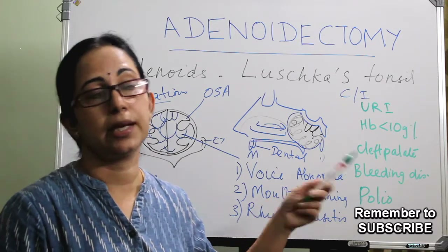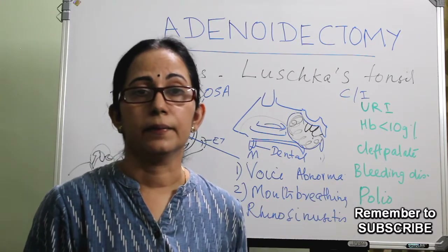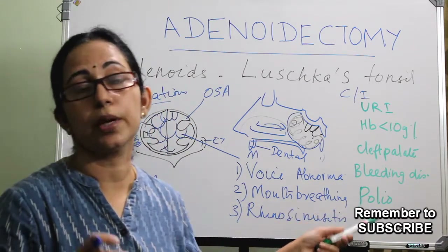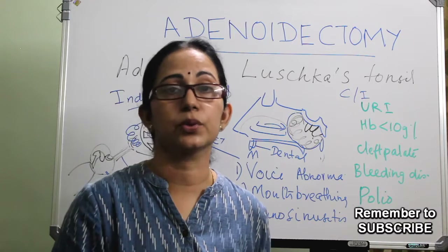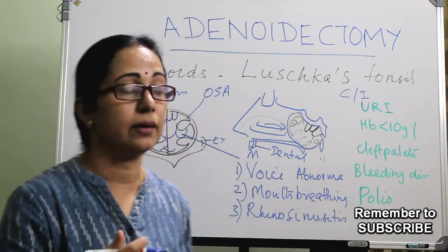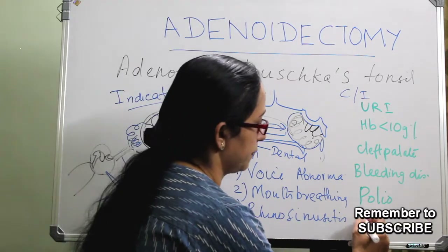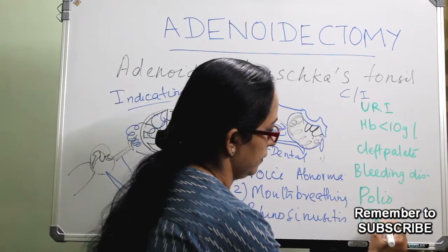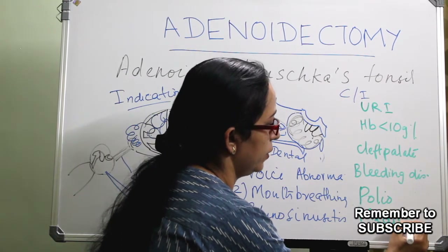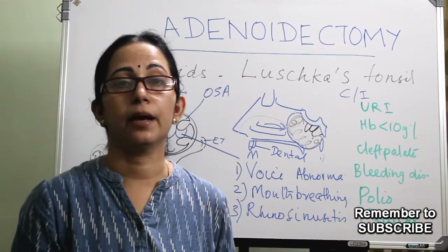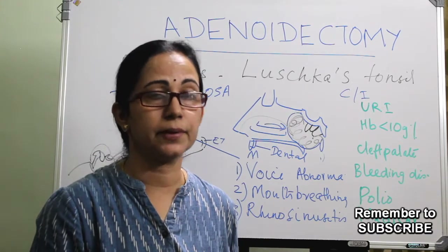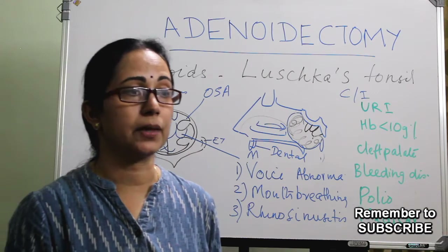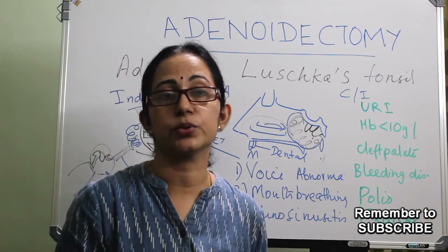Bleeding disorders like hemophilia and other blood dyscrasias are contraindications. An epidemic of polio is an absolute contraindication. Medical problems like uncontrolled diabetes, hypertension, and asthma — especially if doing the procedure in adults — are also contraindications, and it is usually avoided at the time of menstruation in females.